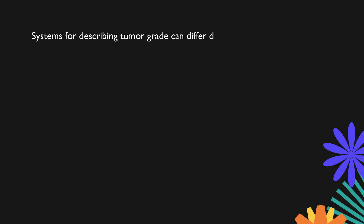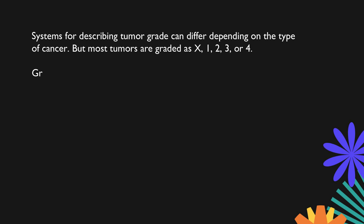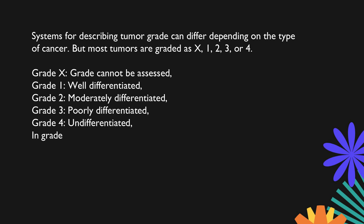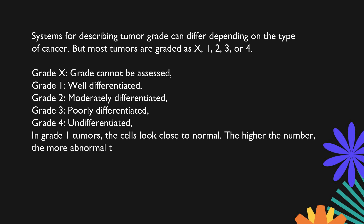Systems for describing tumor grade can differ depending on the type of cancer. But most tumors are graded as X, 1, 2, 3, or 4.